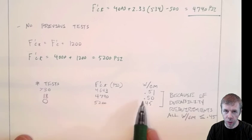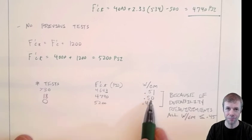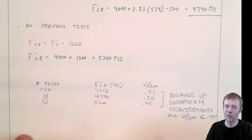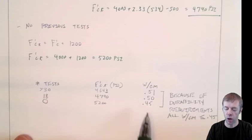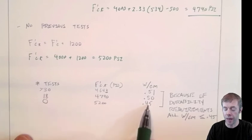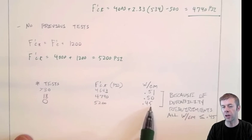If I look at the water to cement ratios I need, notice these are almost the same. So there's some benefit to getting above 30 tests, but not a bunch. But there is quite a bit of benefit of getting to 18 tests. I can drop my water to cement ratio quite a bit. And this could be helpful. This could help me save money.